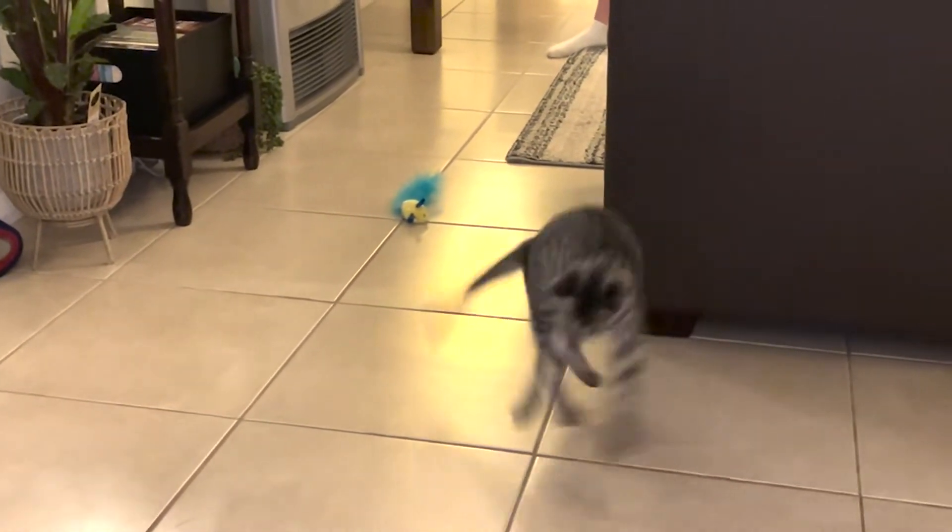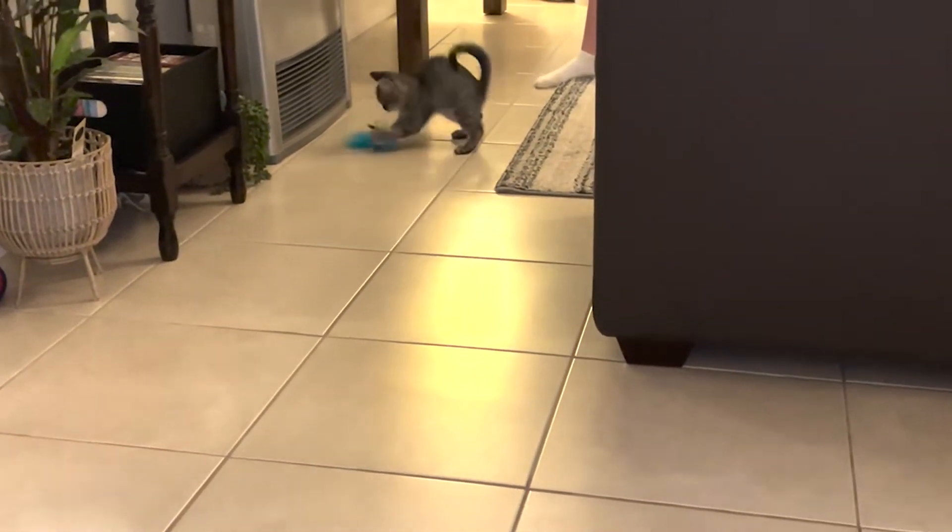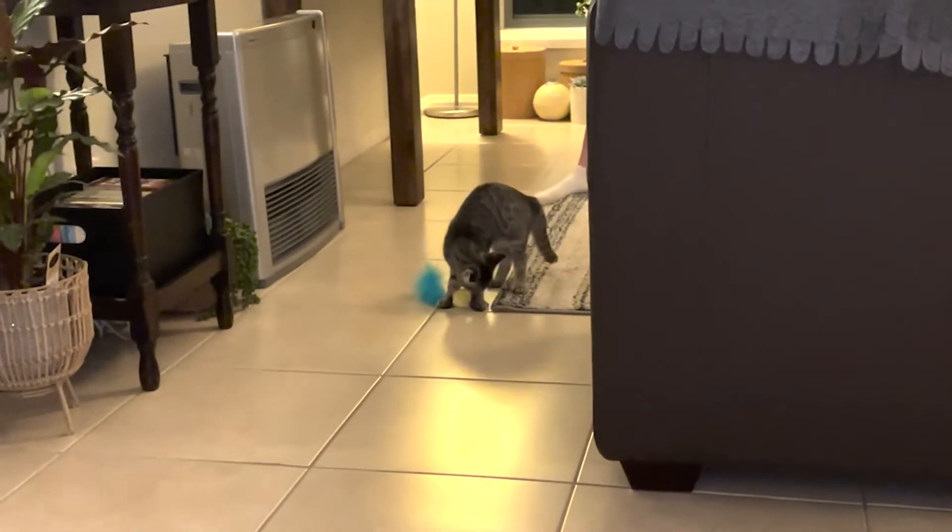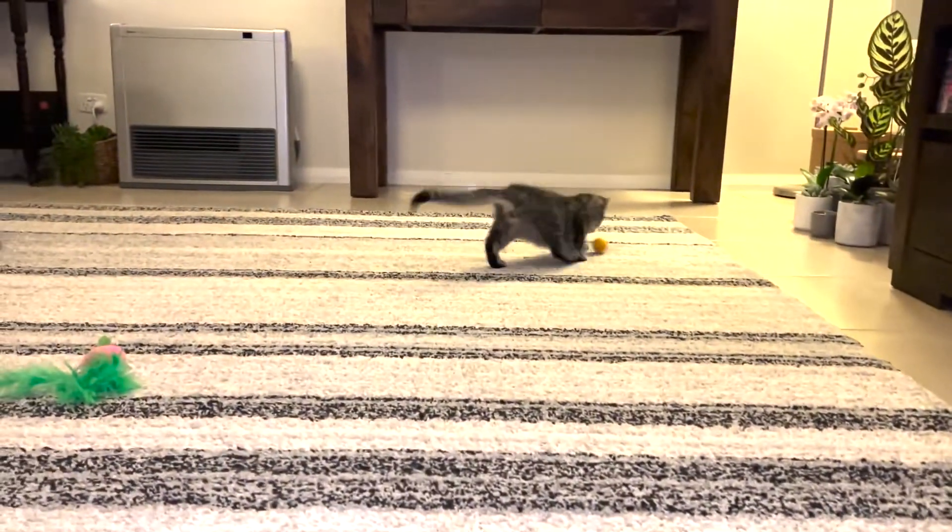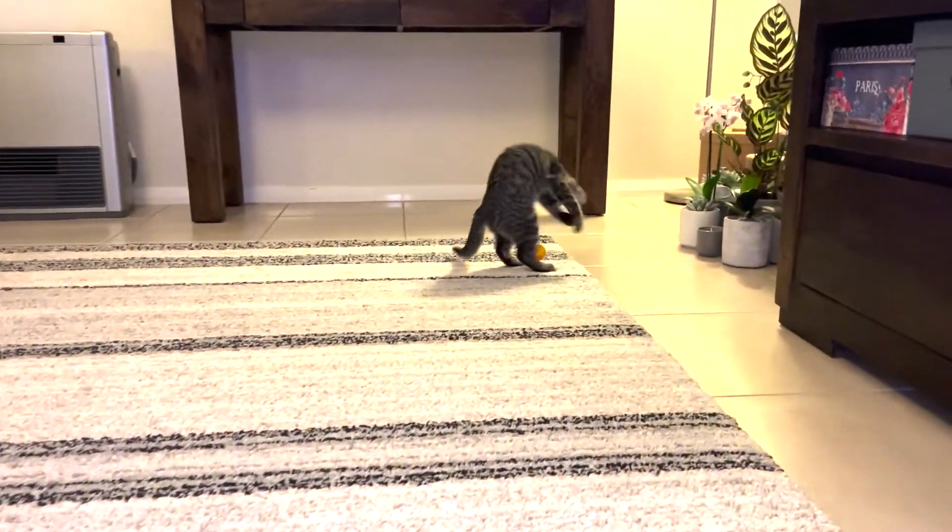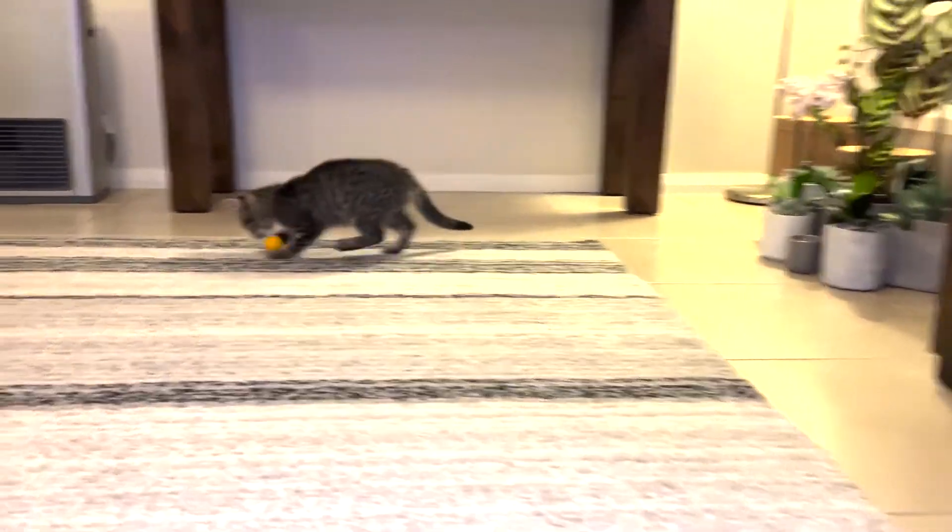Here's our kitten Misty when she was first learning to play with a ball, and it's a great demonstration of an adaptive step size in a learning algorithm. When she's first learning, her eyes are taking measurements of the ball's behavior, and she's updating her estimate of what the ball is going to do next.